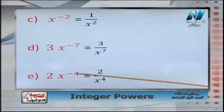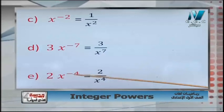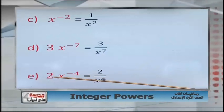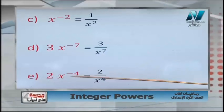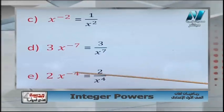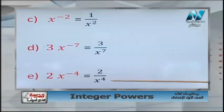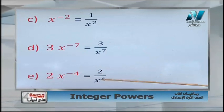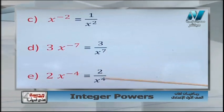For 2 x power negative 4: the 2 stays as it is; negative power x moves to denominator, giving 2 over x power 4.